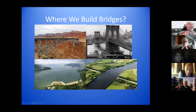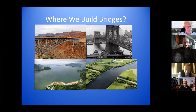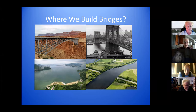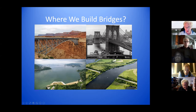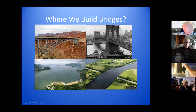So where do we build bridges? The upper left is a picture of a bridge at the Grand Canyon — it's kind of the entrance to the Grand Canyon. The lower left shows a bridge from the mainland to an island. The upper right is the Brooklyn Bridge, crossing the East River in New York City. And the lower right looks like there's definitely a need for a bridge to join two sections of highway.